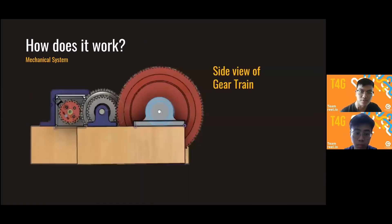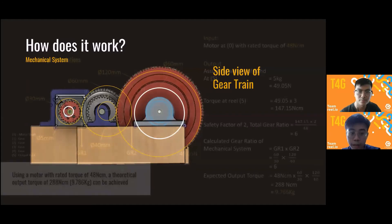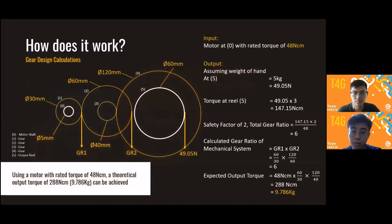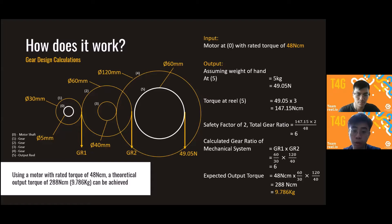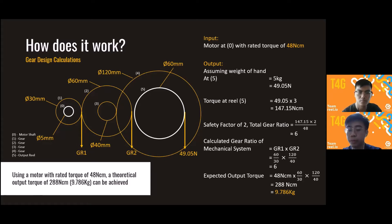Moving on to the specifics of the gear train. The gear train was necessary because, due to financial constraints, we could only purchase a motor that wasn't very strong. We used this gear train to increase the power output of the motor so it could lift the hand of a typical person. These are the calculations we performed to design the gear train, ultimately achieving an expected output capable of lifting around 10 kg in weight.